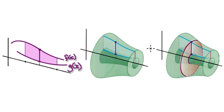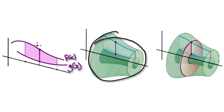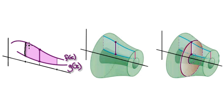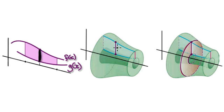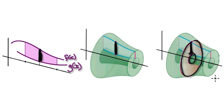So to work out the volume of this solid here, we would sum up all the washers. Let's just look at this one particular washer here. This washer here corresponds to this bit here, which corresponds to this washer here — and you can see that you've got a hole in the middle.